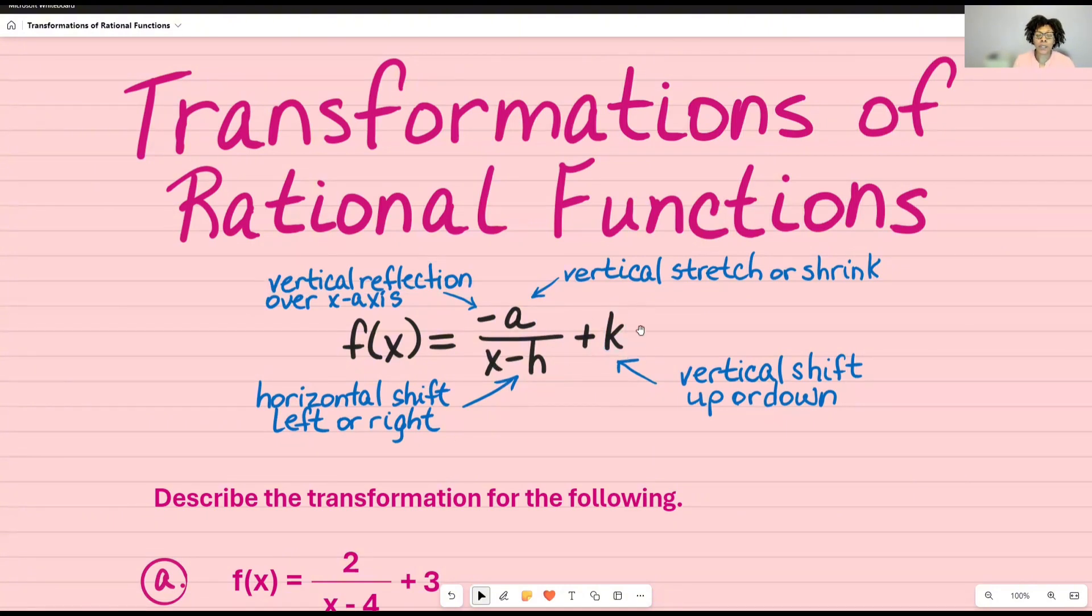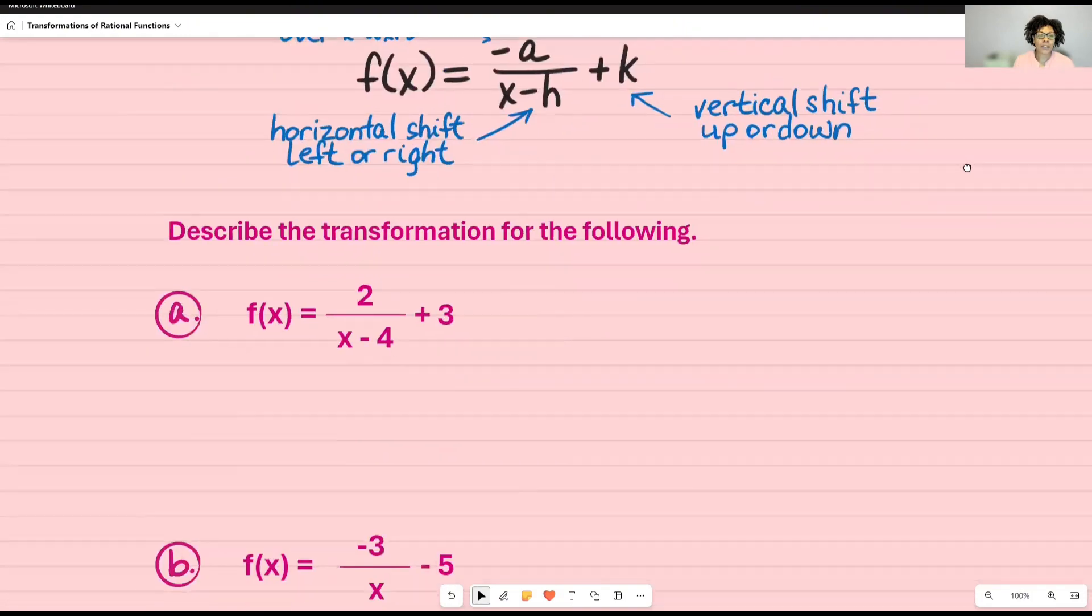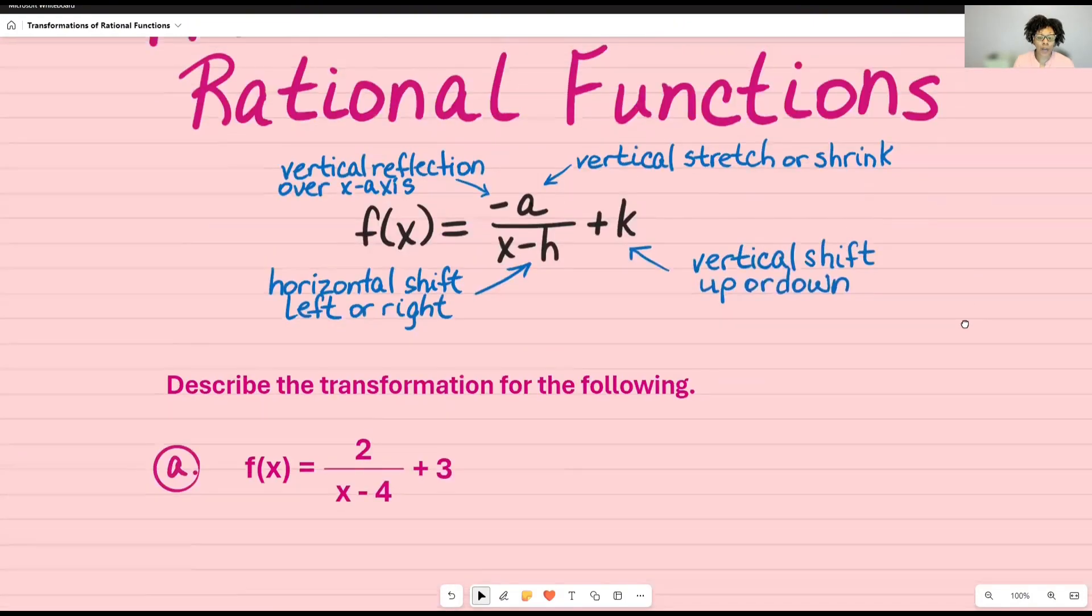And then this one, plus k, that's just what's shown here in the function, but it could also be a negative. And that tells me that I'm going to have a vertical shift either up or down. So I have two examples. It's going to be a really quick video. So I'm asked to describe the transformation for the following.